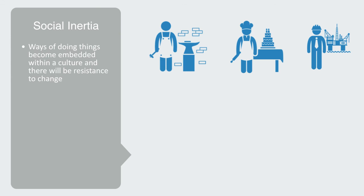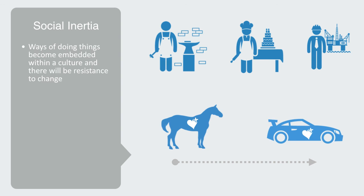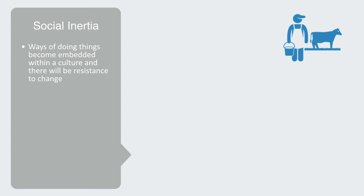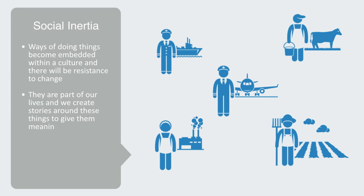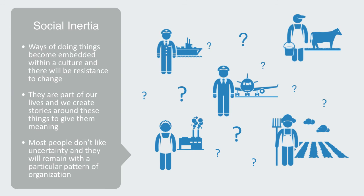This inertia of the lock-in effect is not just a technical phenomenon, but also a socio-cultural one. Ways of doing things become embedded within a culture, and there will be resistance to change. In the 19th century, horses mattered; today, no one really cares about horses — instead, cars matter and have significance to people. Advertising companies create stories about them and they become part of our culture and way of life. People like to think that their lives have meaning and that things are the way they are for some reason — most people don't like the idea that their world is in some way arbitrary. Added to this is the uncertainty of change: most people will remain with a particular pattern of organization, technology, or solution because it is known and predictable, again creating inertia due to socio-cultural factors.